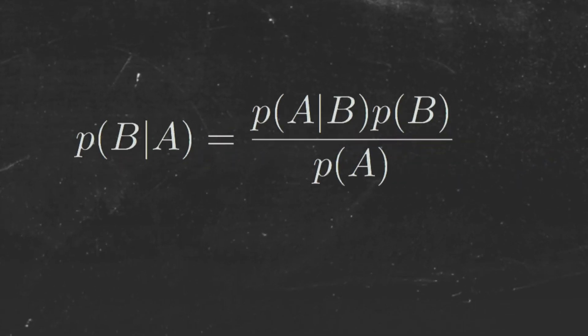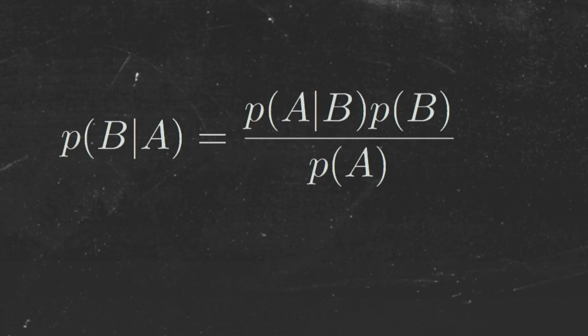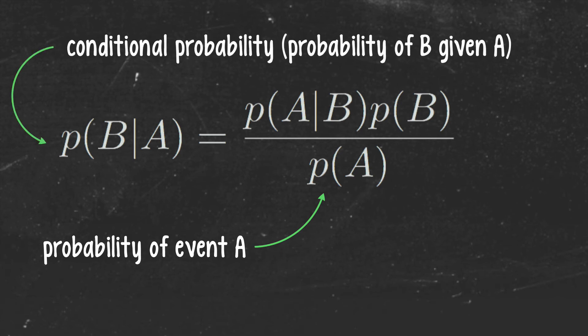This is what Bayes' theorem looks like in mathematical form, and when we break it down we'll see that it's really just a more formal way of saying what we described in our intuitive approach. All of the terms in the equation are probabilities. Some are simple probabilities, like P(A), which is just the probability of the event A. Others are what mathematicians call conditional probabilities, like this one, which we can read as the probability of B given A. This means the probability of the event B given that A is true, or that A has already occurred.